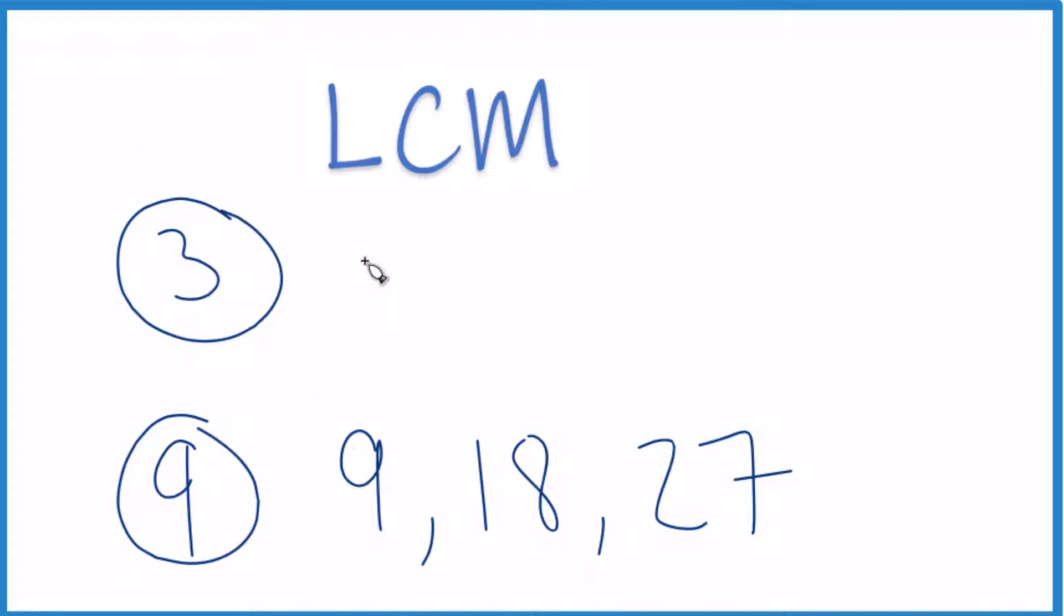Let's take a look at 3. 3 plus 3 is 6. 6 plus 3 is 9. And there we can see we have a common multiple. It's common to both numbers and it's the smallest one. It's the first one we found here.